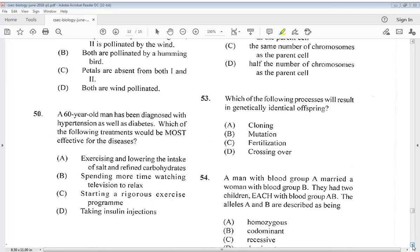Let's go to number 50. It says a 60-year-old man has been diagnosed with hypertension as well as diabetes. Which of the following treatments would be most effective for the diseases? A. Exercising and lowering the intake of salt and refined carbohydrates. B. Spending more time watching television to relax. C. Starting a rigorous exercise program. D. Taking insulin injections. So we know that is A, exercising and lowering the intake of salt and refined carbohydrates.